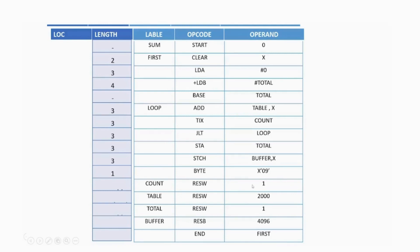Next, 'COUNT RESW 1' — we are reserving one word, so multiply 1 by 3 to get 3. Convert 3 to hexadecimal — it is 3 itself. So the length is 3. For 'TABLE RESW 2000' — we are reserving 2000 words, so 2000 multiplied by 3 equals 6000. Converting 6000 to hexadecimal gives 1770. So the length of this instruction in hexadecimal is 1770.